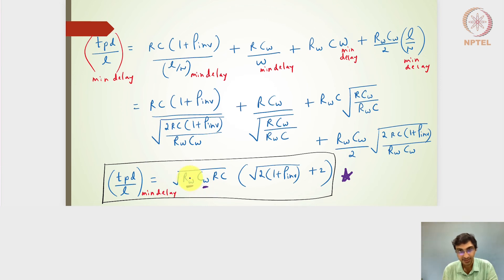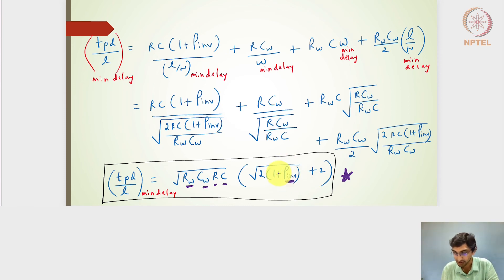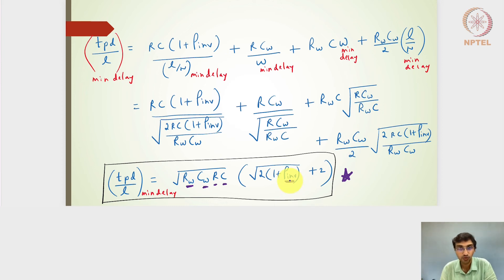The minimum delay per unit length is expressed in terms of rw and cw — the wire's resistance and capacitance per unit length — and r and c — the unit inverter's switching resistance and capacitance. It also depends on the normalized parasitic factor ρ_inv, which can be 1 or less than 1 using folded technology.